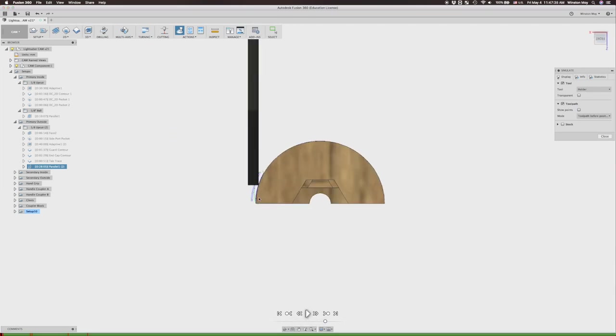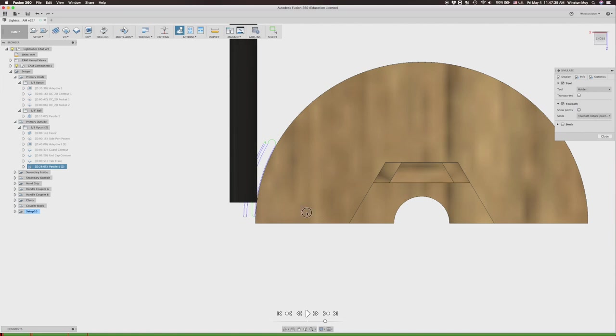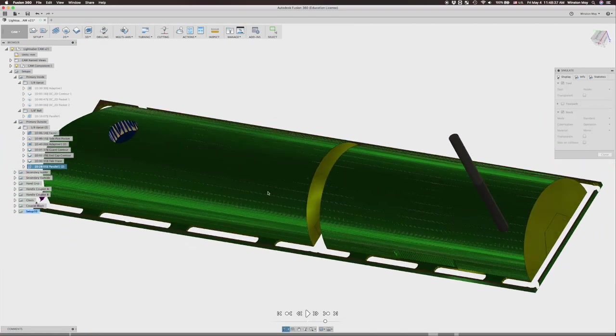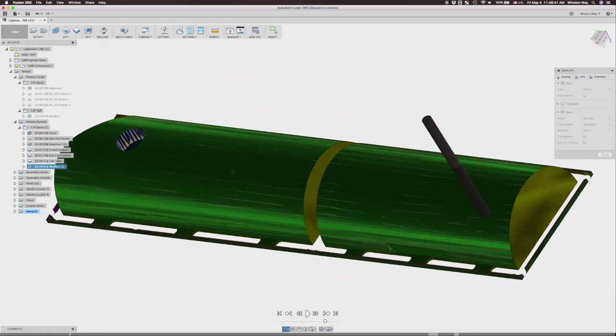I'll use a 2D contour to define as much of that outer profile as possible. In certain places, I'll use tabs so that I can cut through to my wasteboard and still keep my parts in place. And finally, I'll use a parallel toolpath to smooth out the shape of my lightsaber. I'm using a flat end mill so I can make contact with my piece all the way down to the table.